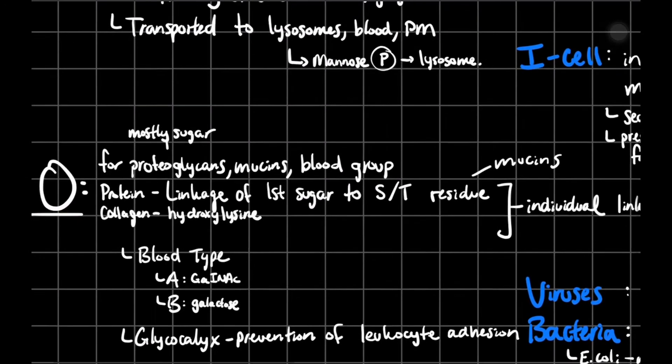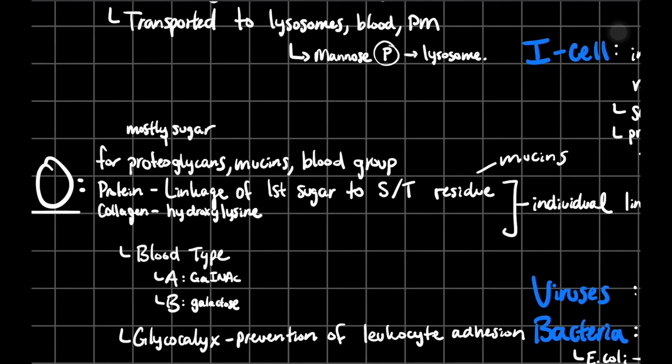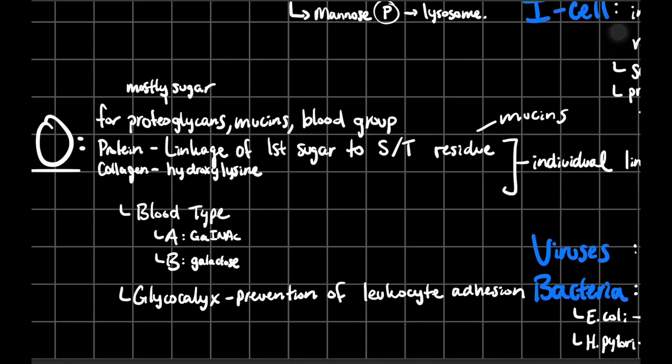For your O-glycosylation, that's going to be on your hydroxyl groups. This happens to proteoglycans, mucins, and blood groups. Basically, proteoglycans have more sugar in them. Then you can have O-glycosylation onto protein or collagen. For proteins, you're going to have that first sugar to a serine or threonine residue. That happens mostly in mucins. For collagen, it has to be on that hydroxylysine that we were talking about before. You can also use O-glycosylation for blood type. For your A blood type, you're going to have GalNAc. For B, you're going to have galactose as your sugar. For your O-type, you're going to have nothing. There's not going to be anything. Then for your AB, you're going to have both. Your glycocalyx is going to be the prevention of leukocyte adhesion.